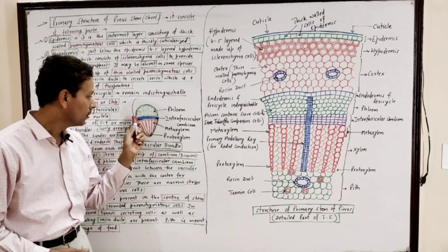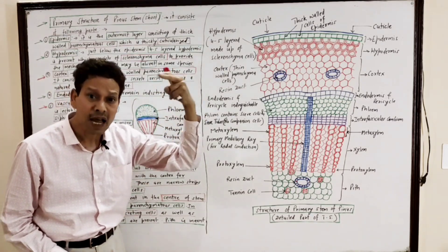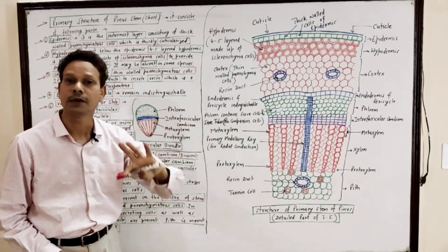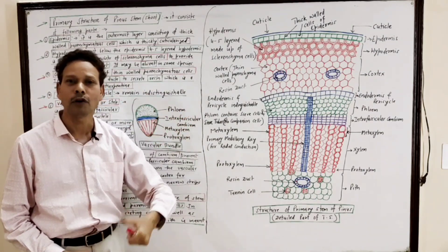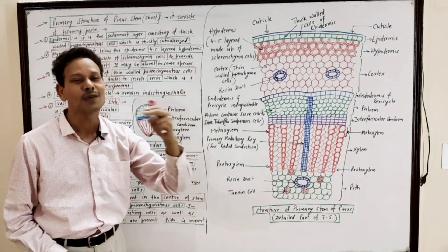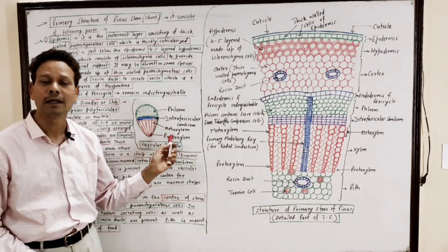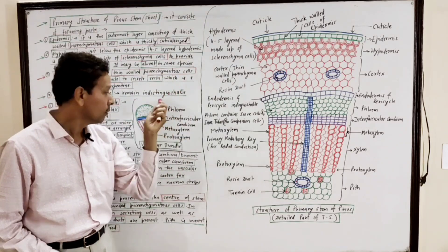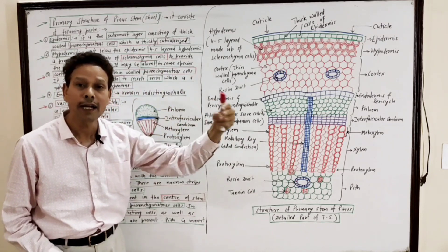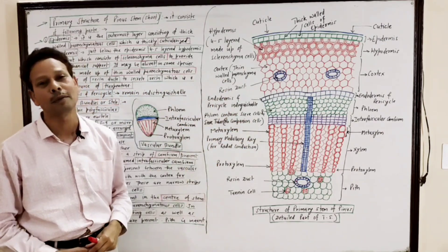This cambium, which is present inside the vascular bundle, is intrafascicular cambium. The vascular bundle in the case of Pinus stem is open, because between the phloem and xylem a dividing meristematic tissue — intrafascicular cambium — is present.